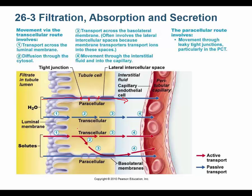We also have the transcellular route, where substances go across the cell — this gives the cell a chance to modify what's moving. Whether you exit through the basement membrane or the basolateral part, it's still transcellular. Both water and solutes can take a paracellular or transcellular route. The paracellular route particularly occurs in the proximal convoluted tubule.